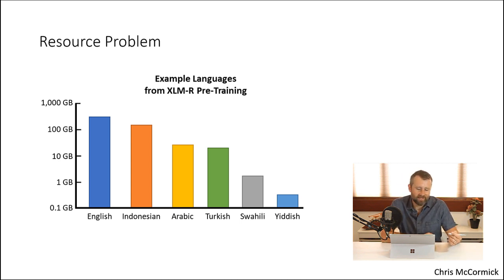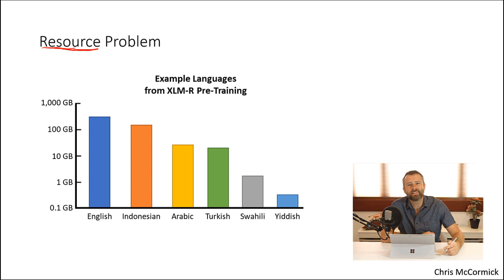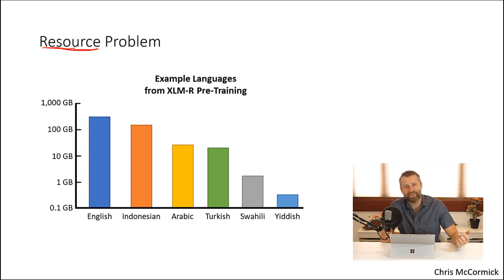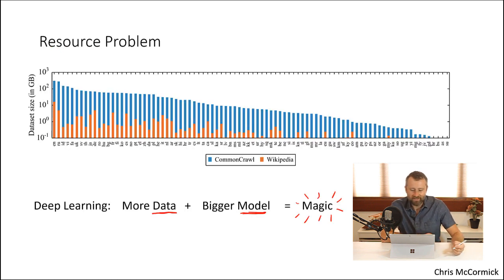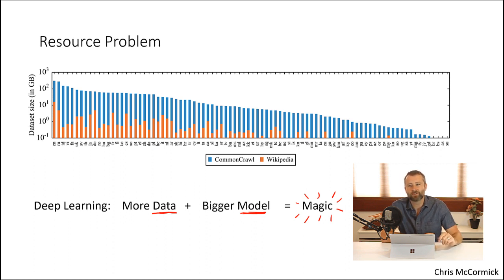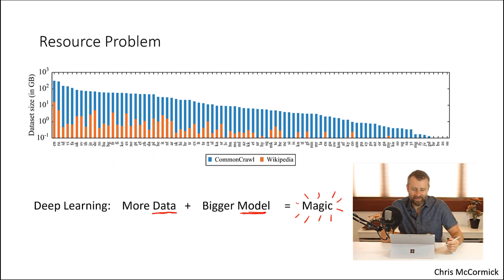The other aspect of the resource problem is the financial one. It's really expensive both in terms of hardware and engineering effort to pre-train a BERT model, and there are a lot of different languages. That's not an insurmountable problem, but it certainly helps motivate the multilingual model concept over the monolingual one.